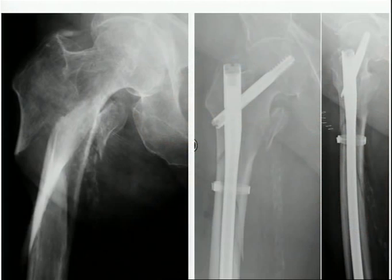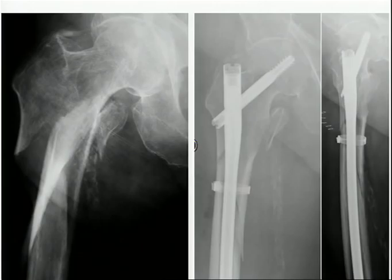So normally in cases with multiple fragments, we go for cerclage wiring or banding to at least ensure there is an intramedullary canal so the nail can do what it's supposed to do.